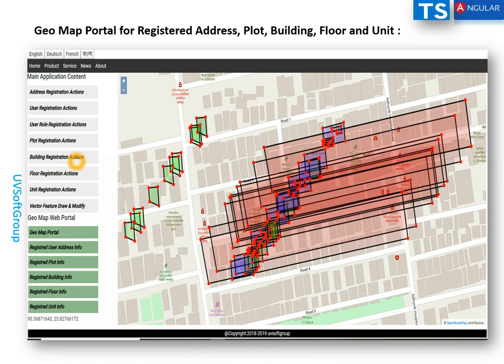Maybe there are 4,000 buildings, maybe 8,000 floors, maybe 16,000 units inside those buildings. Every component, every interaction is possible as a content management system, and different institutes or authorities can use those applications. The enterprise application has the possibility to switch on or switch off which part has to be done by which authority — that means you have a central system, central core development, and user management.